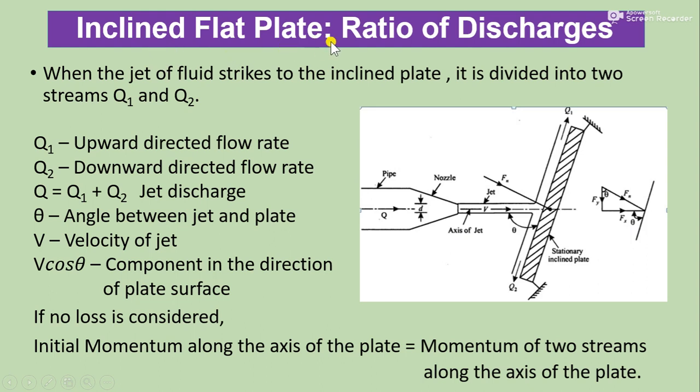Now inclined flat plate ratio of discharges. So here in this figure we see, when the jet of fluid strikes the inclined plate, it is divided into two parts, Q1 and Q2. So Q1 is upward directed flow rate, while Q2 is downward directed flow rate. So Q equals summation of Q1 plus Q2, that is jet discharge.